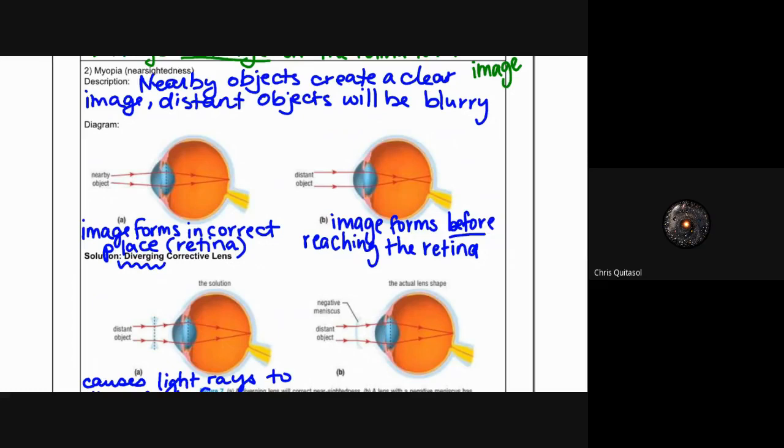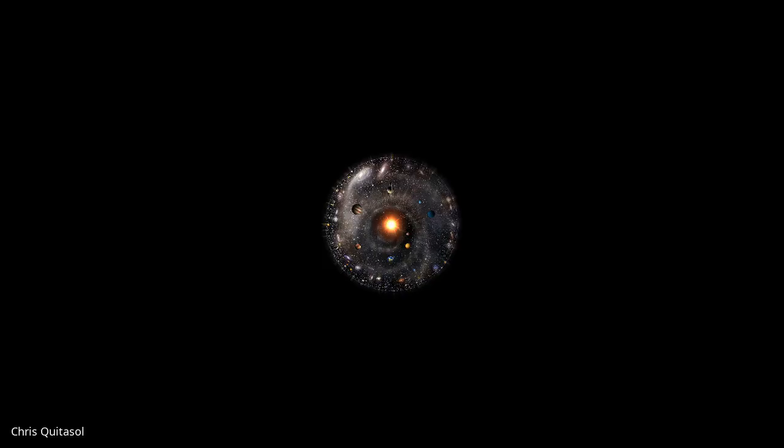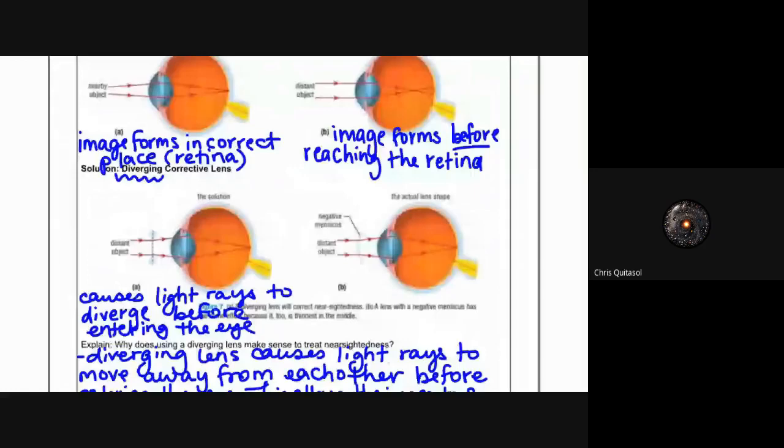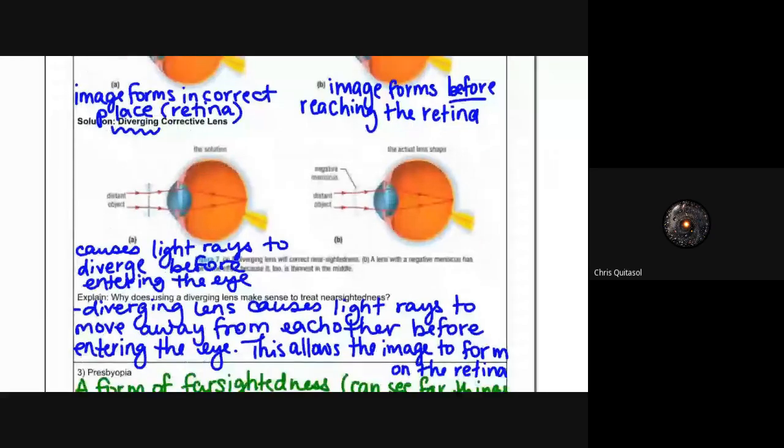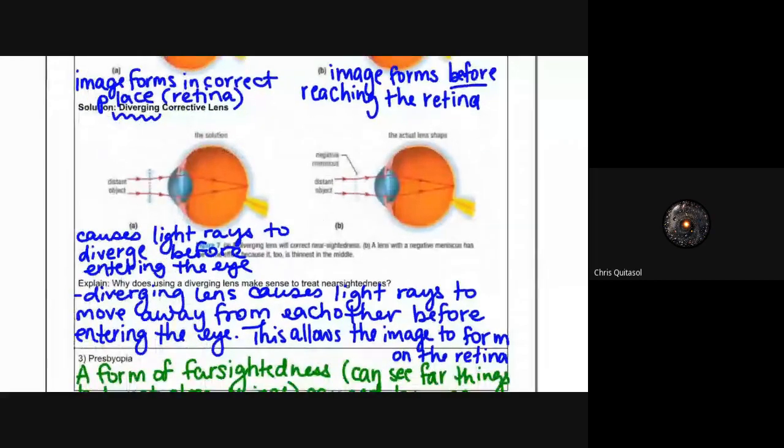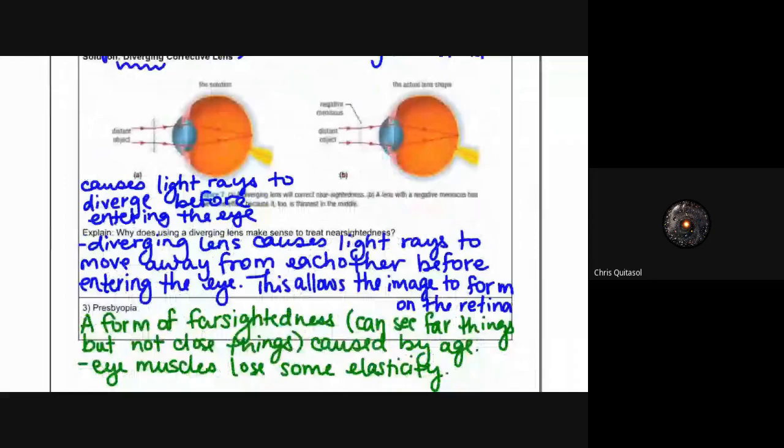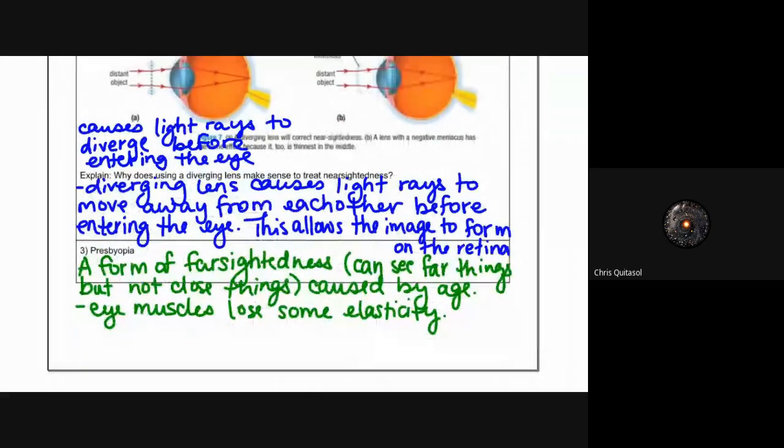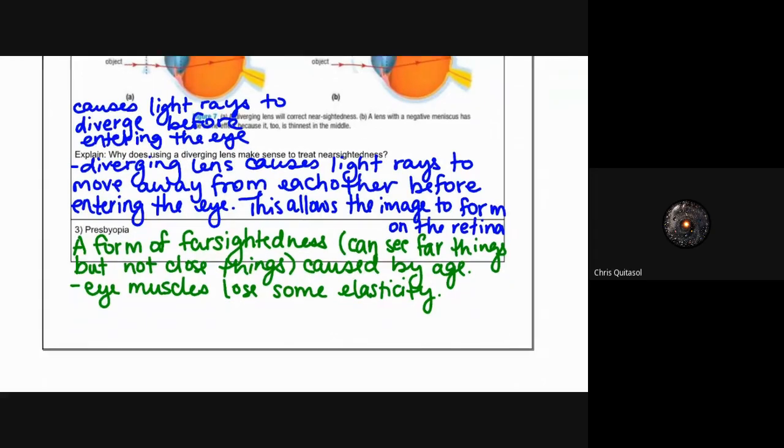We want to create what's called a divergent corrective lens to help correct the issue. Because if the image is forming before the retina, we want to move that image back. So we want to move the light rays away from each other just before they hit that lens, and then the lens can then refocus within the eye that image onto the retina. This causes light rays to diverge before entering the eye. As a result of that, it creates a more crystal clear image. So the key component here with regards to diverging lenses is that it causes light rays to move away from each other before entering the eye, and then the image can then form on the retina by the lens's natural ability.